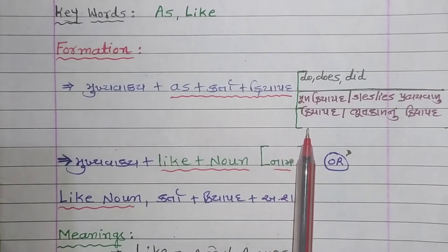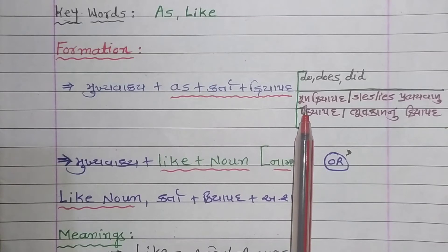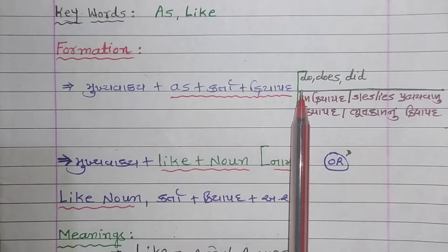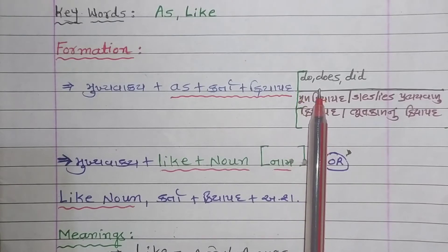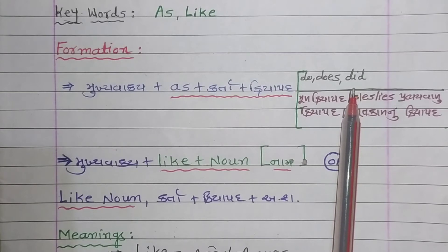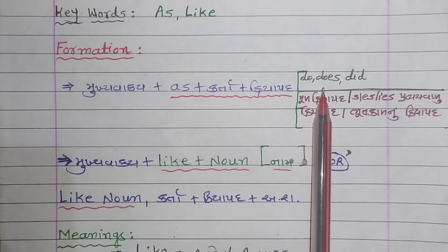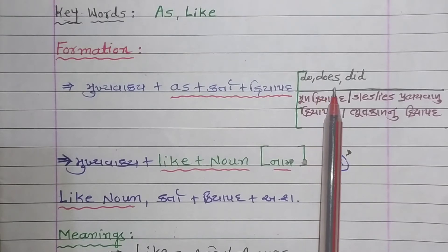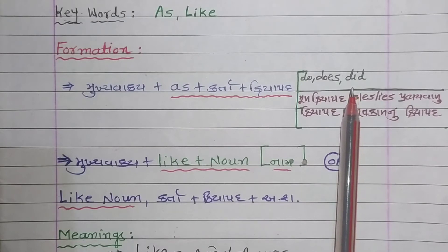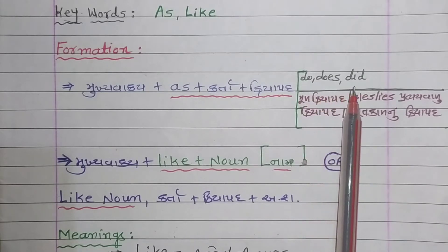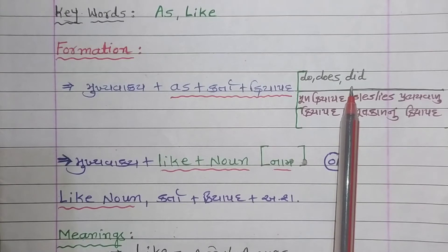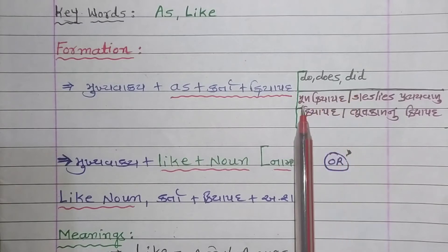અહીં આપણે bracket માં જોઈ શકીએ છીએ: to do ક્રિયા — એટલે કે do, does, કે did. do અને does સાદો વર્તમાનકાળ દર્શાવે છે. do, does, did — આ auxiliary નો ઉપ્યોગ ન કરવો હોય, તો નીચે પ્રમાણે પણ આપણે જવાબ લખી શકીએ છીએ.